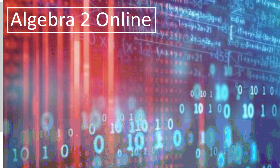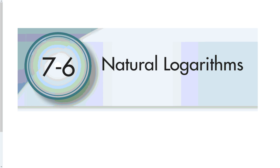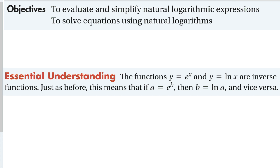Welcome to online Algebra 2. Today we're covering section 7-6: natural logarithms. Our objective is to evaluate and simplify natural logarithmic expressions and to solve equations using natural logarithms. The central understanding is that y = e^x and y = ln(x) are inverses of each other, meaning you can take the exponential function with base e and transform it into a natural logarithm and vice versa.